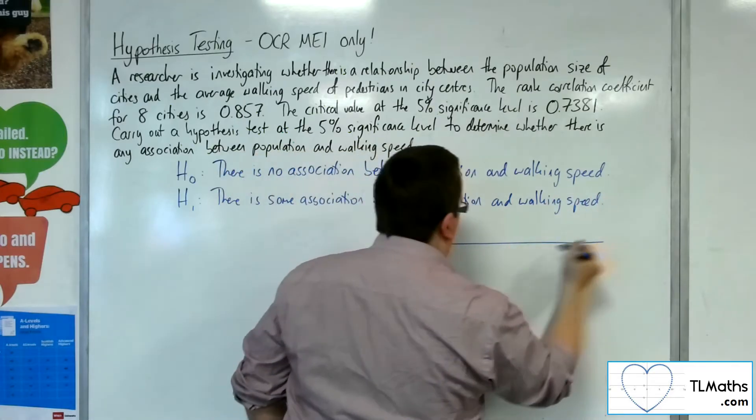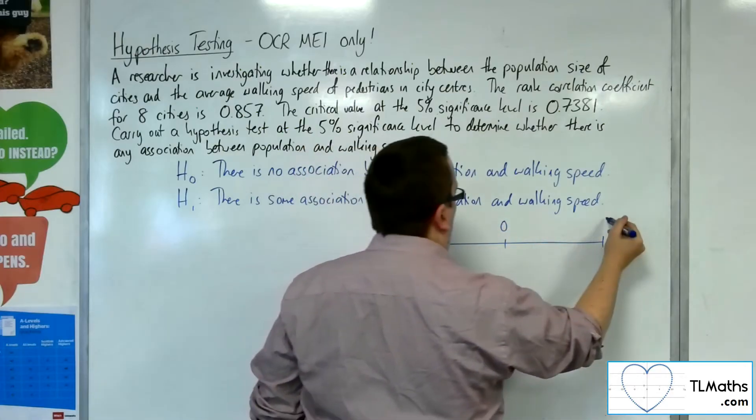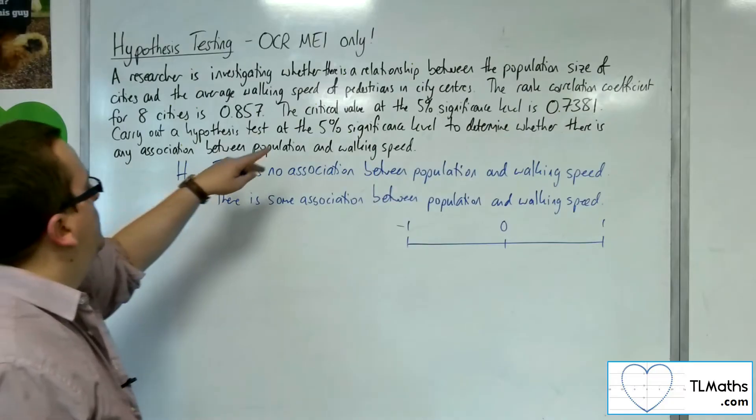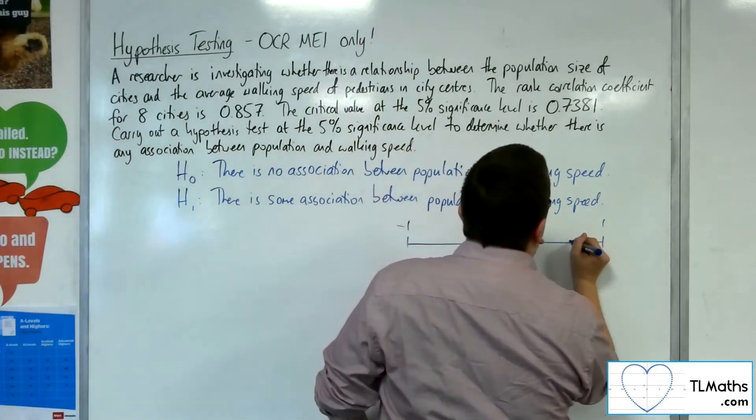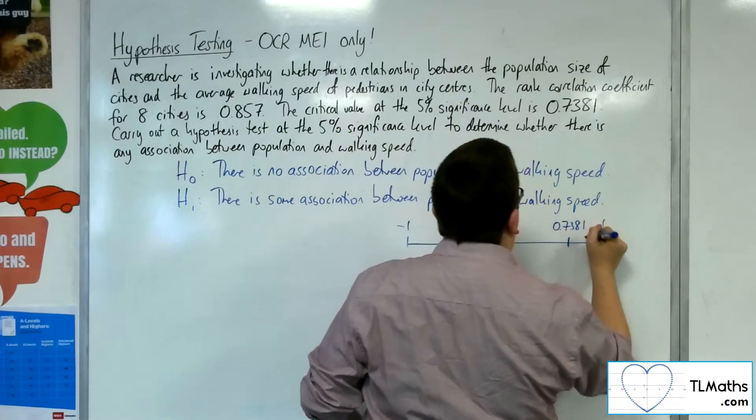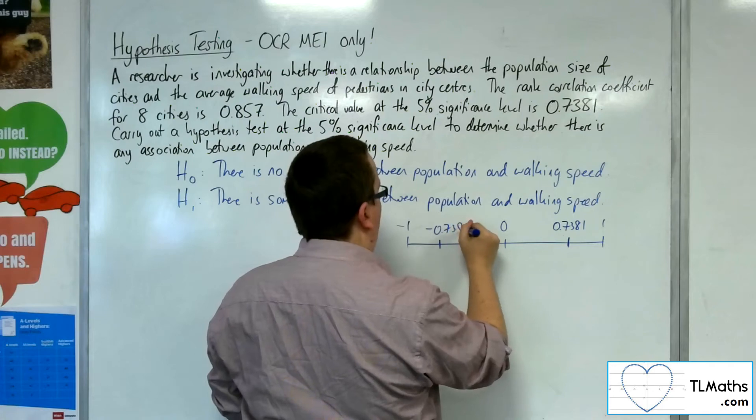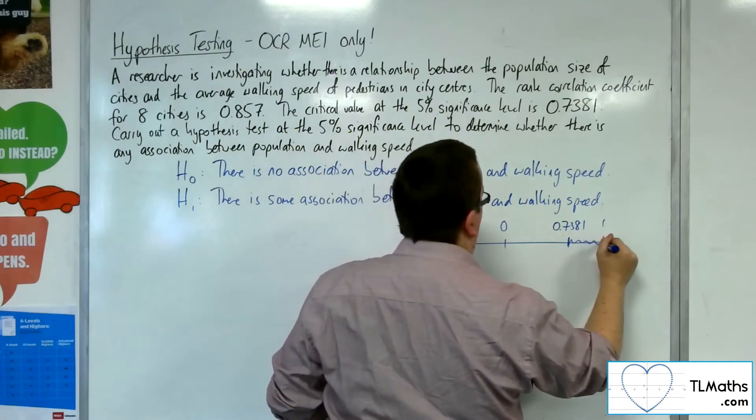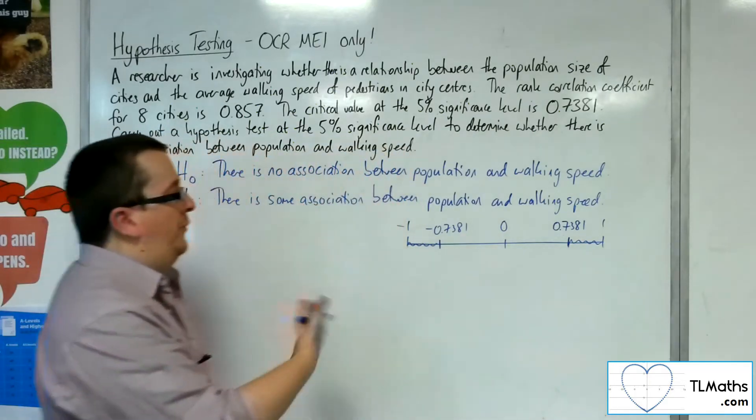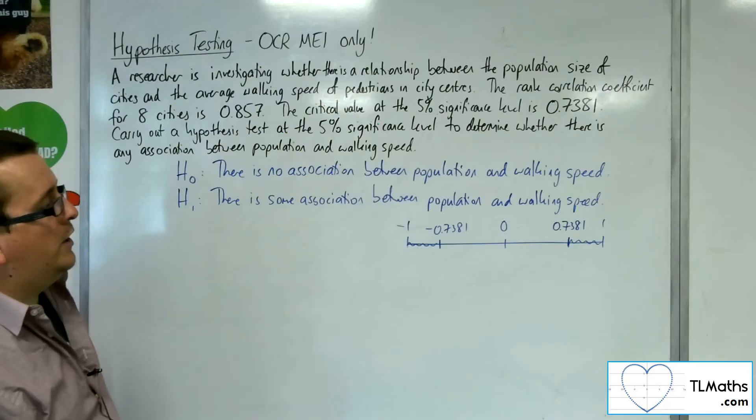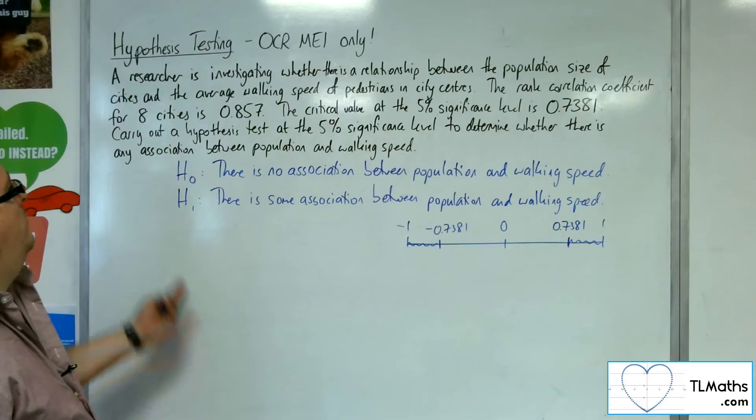On our number line, we have 0, minus 1, and 1. The critical value was 0.7381, so that is 0.7381 up here and minus 0.7381 down here. The critical region—there's actually two: one here and one here—less than minus 0.7381 and greater than 0.7381, because we're doing this two-tailed test.